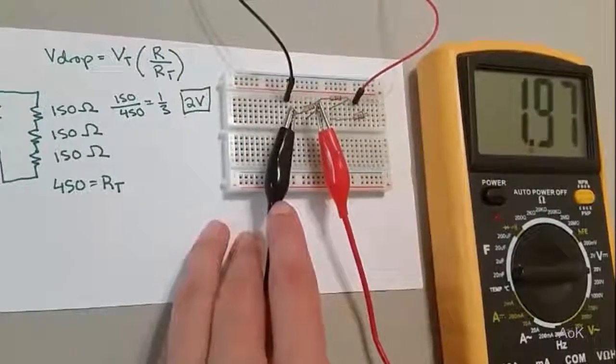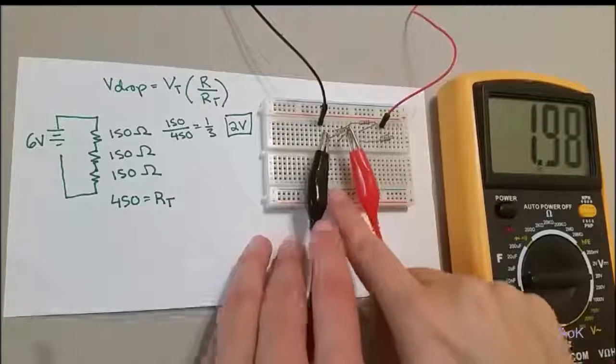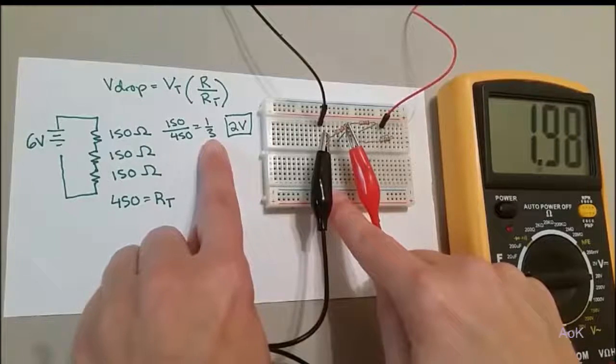Notice that the voltage drop on the other resistors is also right around 2 volts. That's because each resistor is exactly identical to the other, and so the ratio is one-third for each of them.